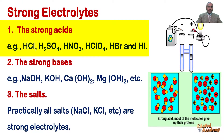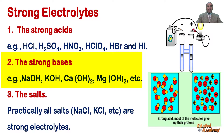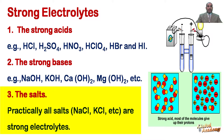The strong electrolytes include: number one, the strong acids like hydrochloric acid, sulfuric acid, nitric acid, hypochloric acid, hydrogen bromide, and hydrogen iodide. Number two, the strong bases like sodium hydroxide, potassium hydroxide, calcium hydroxide, magnesium hydroxide, etc. Number three, the salts — practically all salts are strong electrolytes, like sodium chloride and potassium chloride.